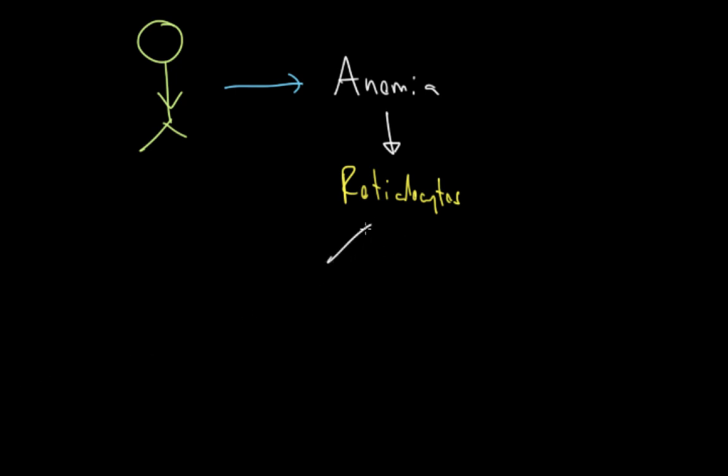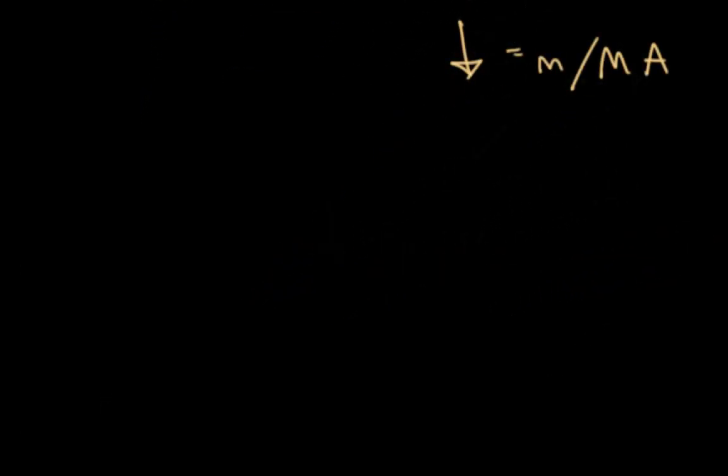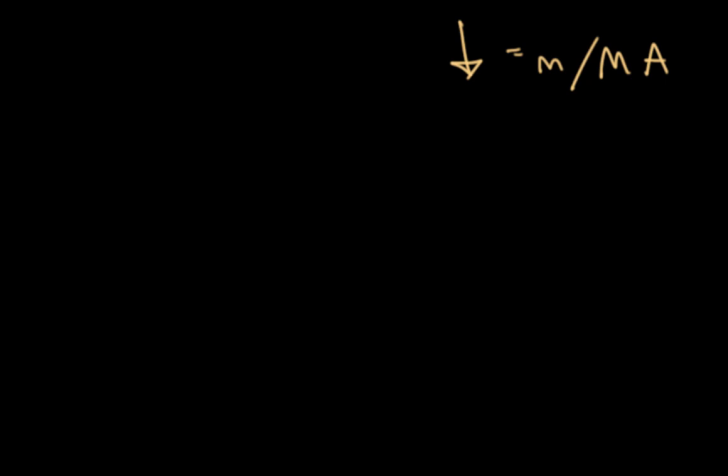So there's really only two options here when it comes to our level of reticulocytes. We can either have a decrease in reticulocytes, or we can have an increase in reticulocytes. Now a decrease is going to indicate either a microcytic or a macrocytic anemia, while an increase in reticulocytes is going to give us a hemolytic anemia. So let's first take a look at the microcytic and macrocytic anemias first, and we'll start off by talking about the mechanism for the decrease in reticulocytes. So the question here is why. Why do we get a decrease in reticulocytes?